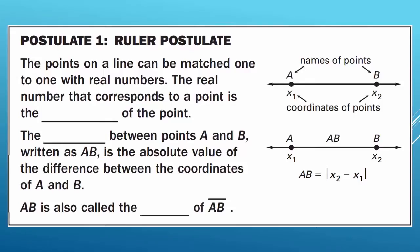Let's look at our first postulate — Postulate 1, the Ruler Postulate. The points on a line can be matched one to one with real numbers. The real number that corresponds to a point is the coordinate of the point. The distance between point A and B, written as AB, is the absolute value of the difference between the coordinates of AB. AB is also called the length of line segment AB.